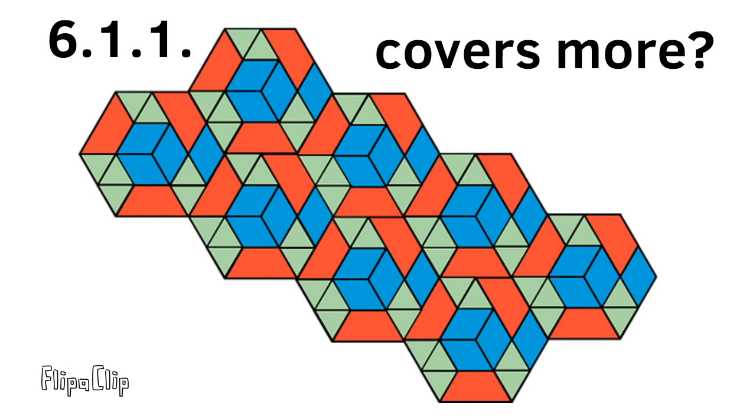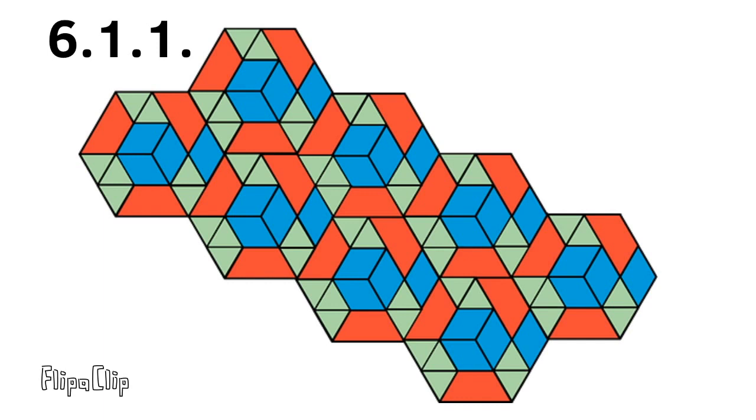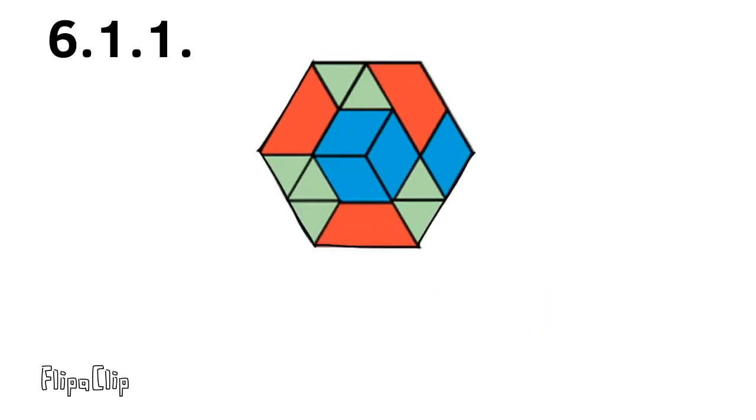Is it the blue rhombuses, the red trapezoids, or the green triangles? First, I'm going to look for a pattern, then I'm going to break it down to just one section of that pattern.